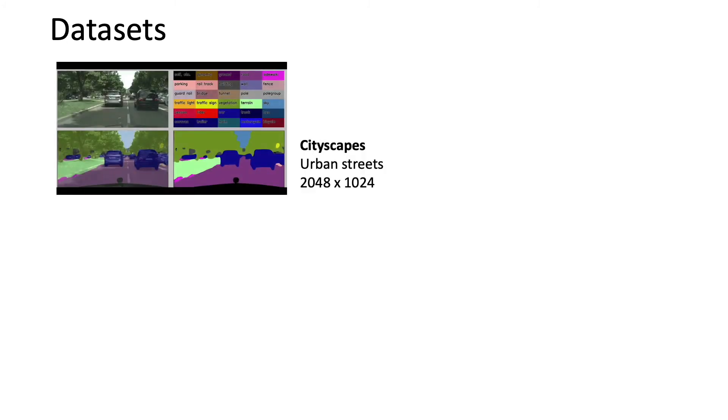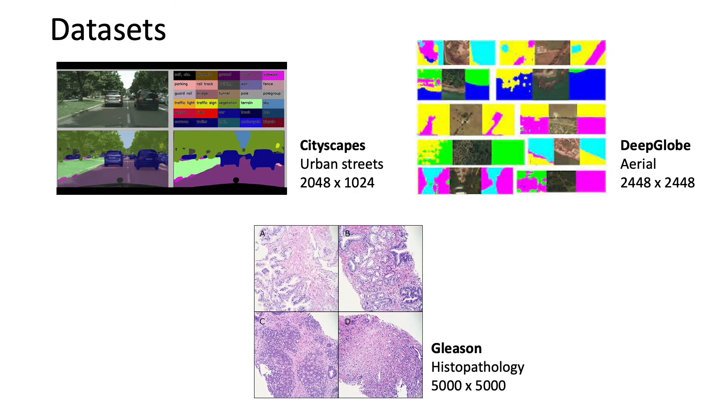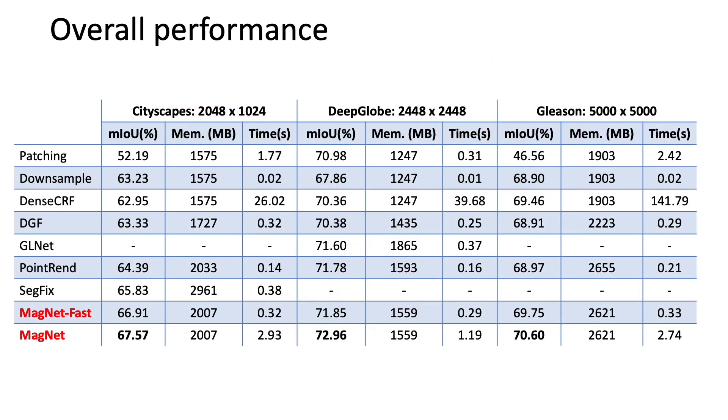To prove the effectiveness of our proposed method, we run on three different high-resolution datasets: Cityscapes, DeepGlobe, and Gleason. This table shows the performance of our framework. In the Cityscapes dataset, the Magnet can improve by approximately four percent from the downsampling baseline.